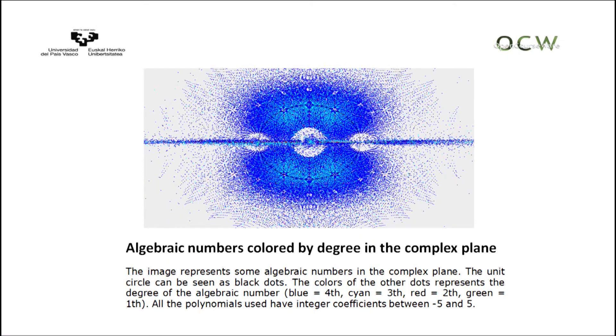To finish with my presentation, let me introduce this picture about some algebraic numbers in the complex plane. You can observe that the unit circle is represented by black dots. Using polynomials with integer coefficients between minus five and five, then we can describe the degree of some algebraic numbers with different colors. For example, the color blue represents the degree four of some of these numbers, and the color red will represent the second degree of some algebraic numbers.